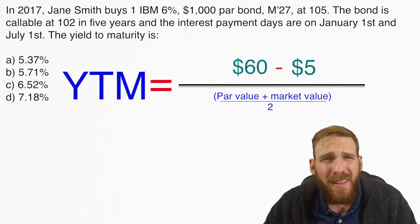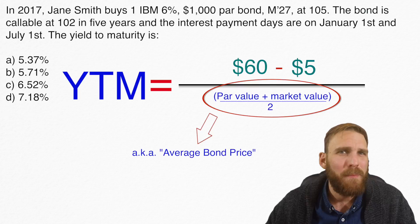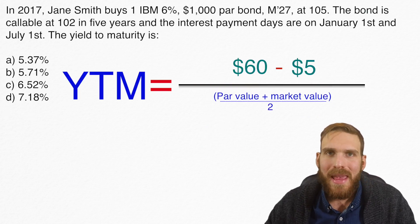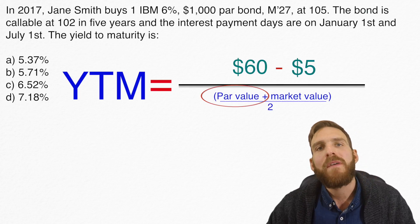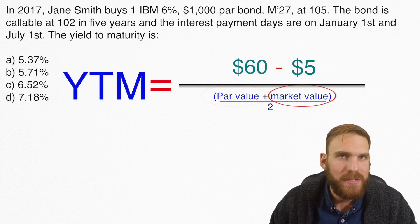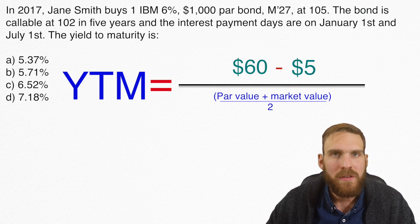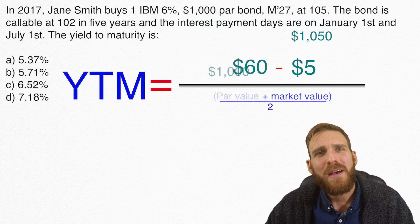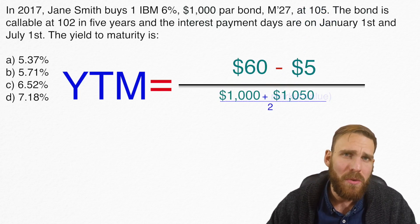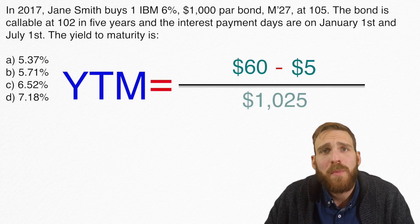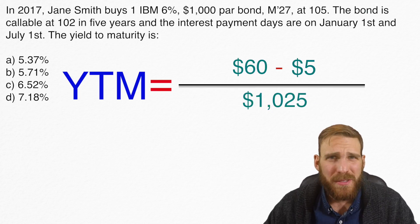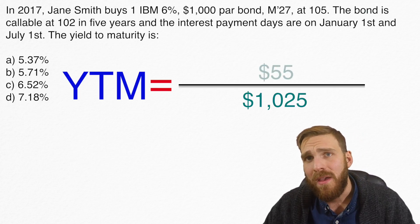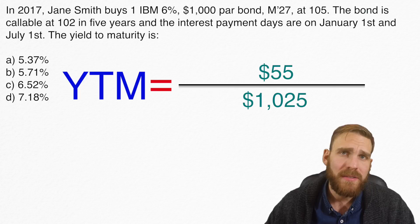Now for the bottom part, all it tells us is that we need the average bond price. To be more specific, all you need is the par value. You add the par value to the market price of the bond and figure out the average between the two prices. The bond is at $1,000 par. If you add in $1,050 and divide that by two, you'll get $1,025. And that is our average bond price. Once you plug in those numbers, it's a fairly simple calculation. All we do is take our $55 and put that over our average bond price of $1,025.